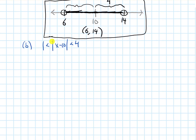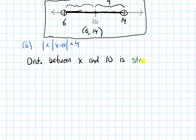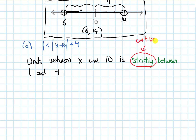Part B adds an extra condition: the absolute value of x minus 10 also has to be greater than 1. In words, this means the distance between x and 10 has to be greater than 1 and less than 4 — so the distance is strictly between 1 and 4. When I say strictly between, that means it cannot be equal to 1 or equal to 4.